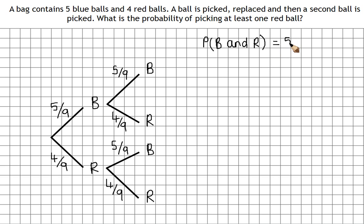So it's going to be five ninths times four ninths, that's going to be 20 over 81, and you can write that at the end of the branch. So the end of this branch, that'll be 20 out of 81.